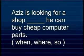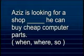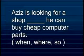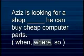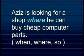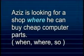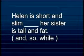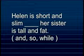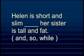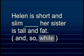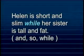Aziz is looking for a shop. He can buy cheap computer parts. The conjunction is 'where'. Helen is short and slim while her sister is tall and fat.